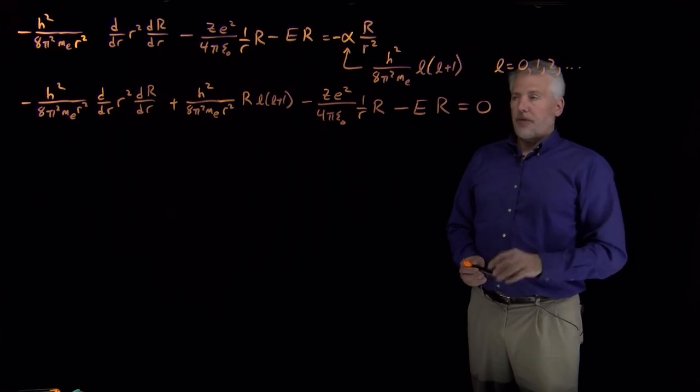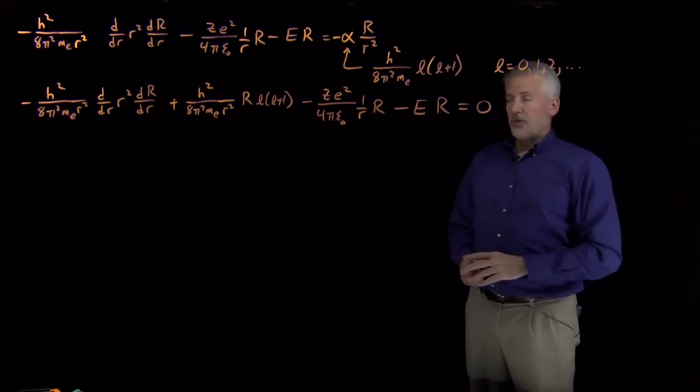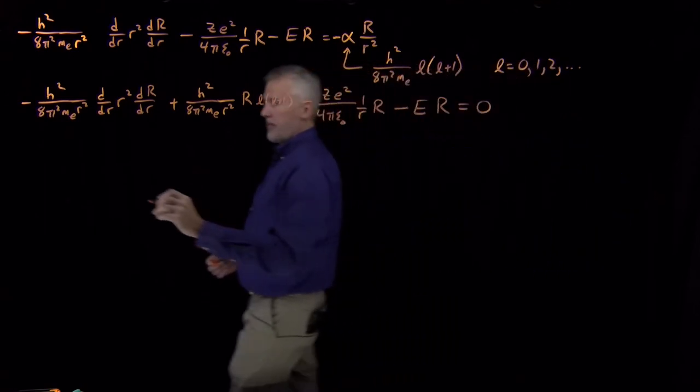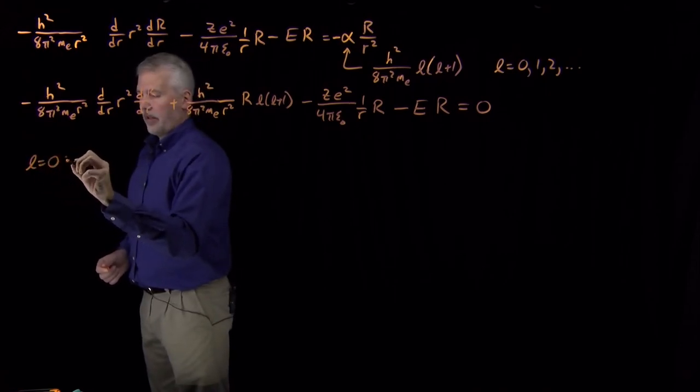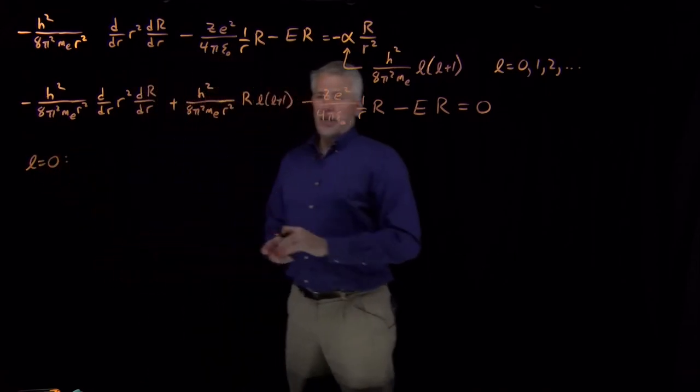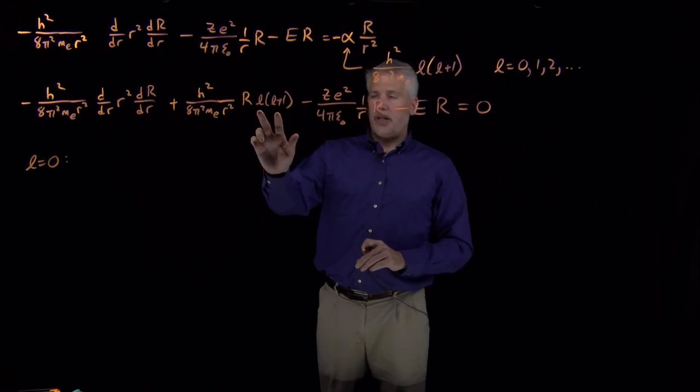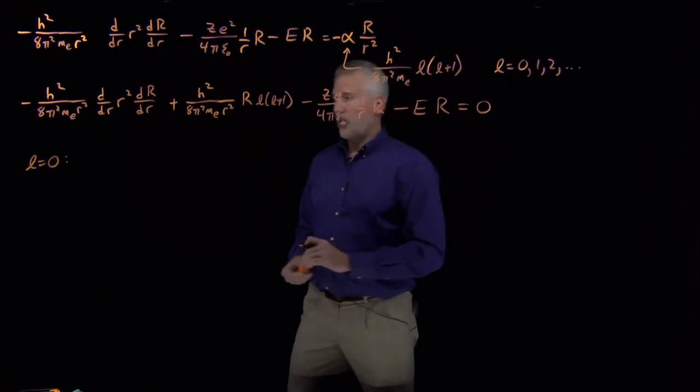0, 1, 2, and so on. So if I rewrite this equation with L equals 0 in it. So when L equals 0, that one's fairly convenient, because this L times L plus 1 makes this whole second term go away.